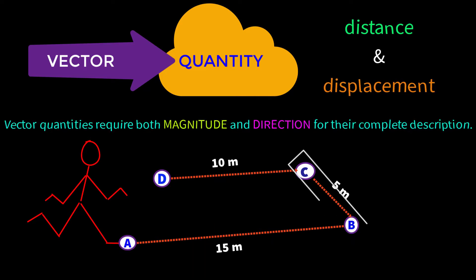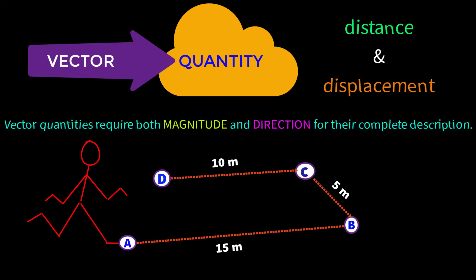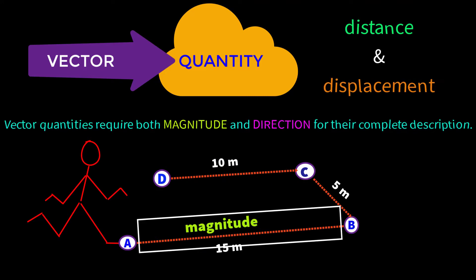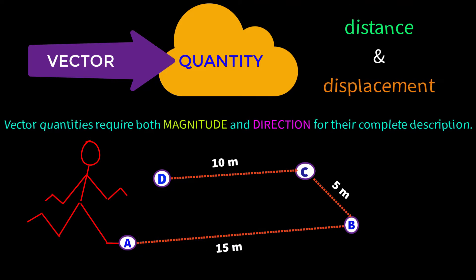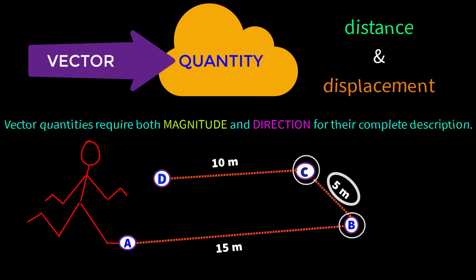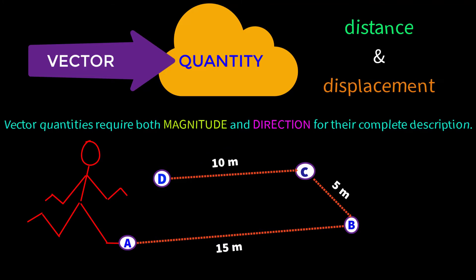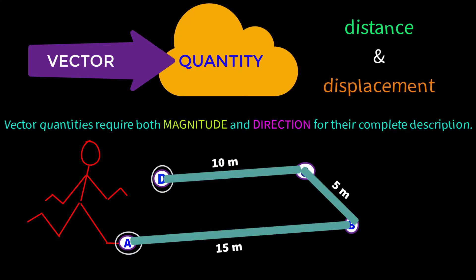And at last from point C to point D at a distance of 10 meters. Here AB is a line segment, BC is a line segment, and CD is also a line segment. A line segment has magnitude only, and the magnitude is the value of its length. So 15 meters will be the magnitude for the AB line segment. Similarly, 5 meters will be the magnitude for the BC line segment, and 10 meters will be the magnitude for the CD line segment. From point A to point D is the total length traveled by the boy.